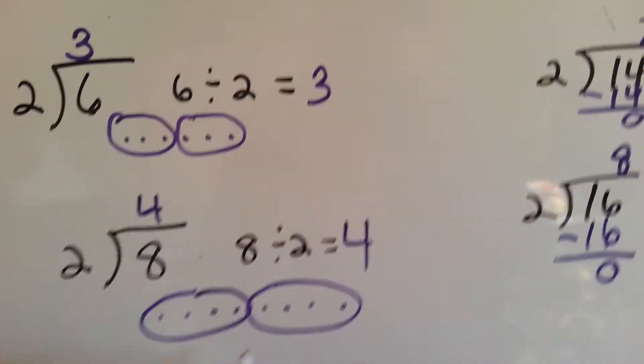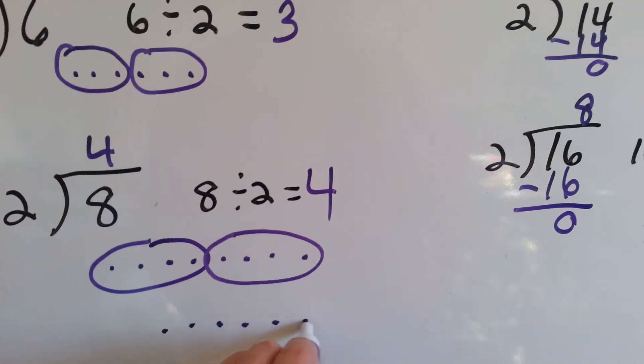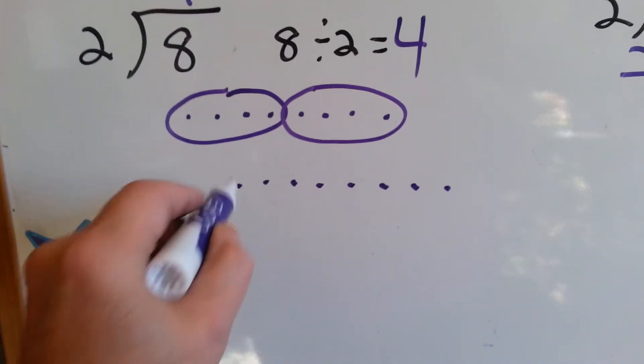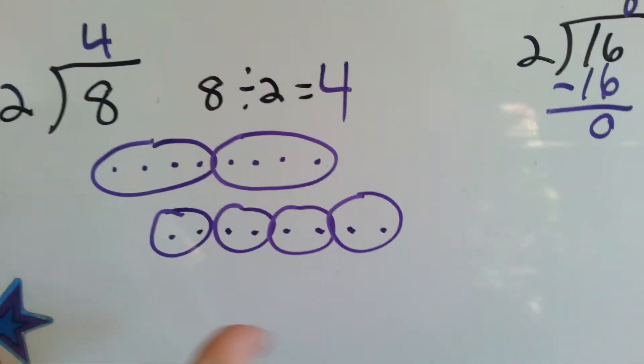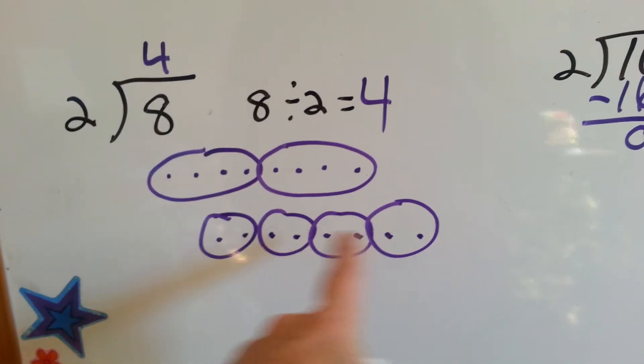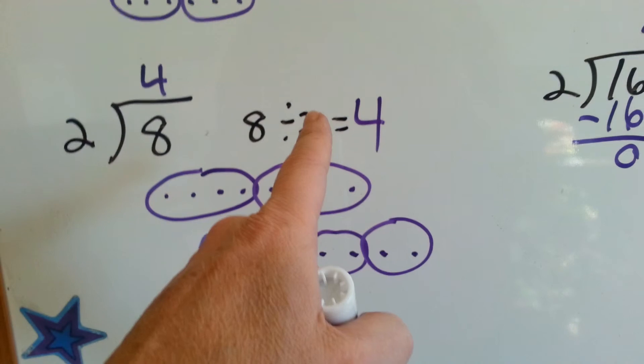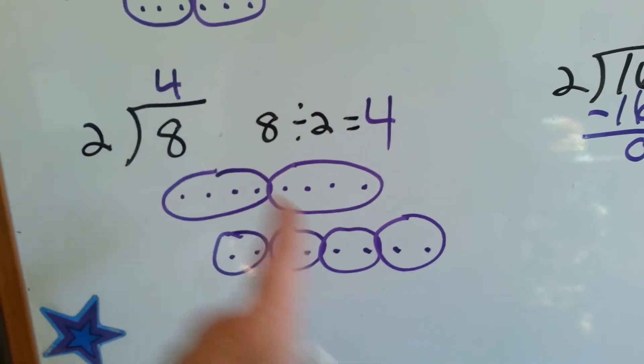2 equal groups or if we had 2 in each group, we could go like this and we'd have 4 still. See? 4 groups of 2. 2 groups of 4 or 4 groups of 2. Same answer.